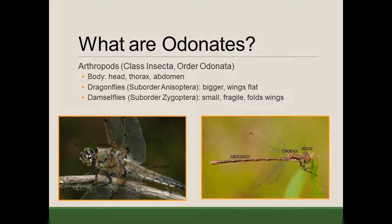Arthropods are generally characterized by having exoskeletons — so unlike us, where we have internal skeletons, their skeletons are in the form of a hard outer shell — and they also have segmented bodies. For insects, class Insecta, there are three body segments: the head, the thorax, and the abdomen. On both of these images, you can see that those segments are very clearly marked.